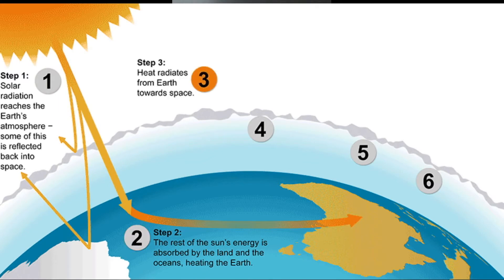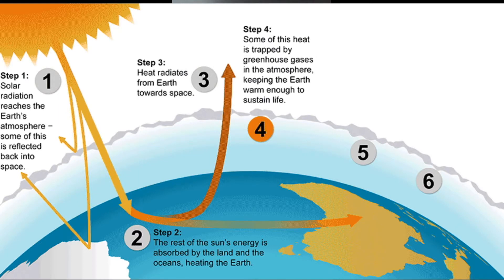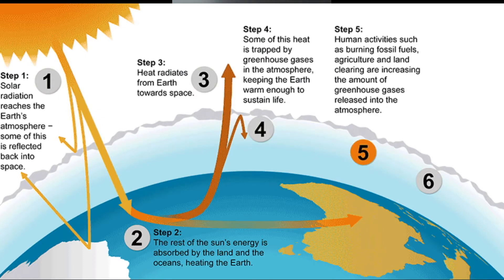Heat radiates from Earth towards space. Step 4: Some of this heat is trapped by the greenhouse gases, keeping the Earth warm enough to sustain life.